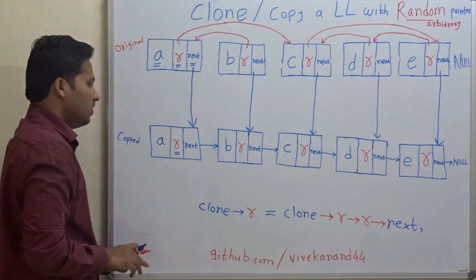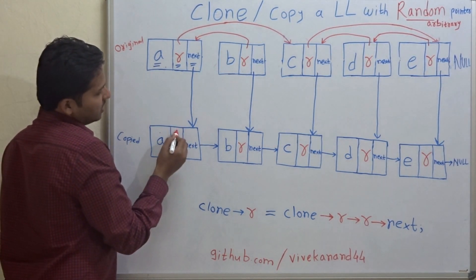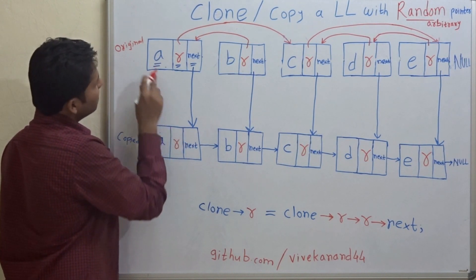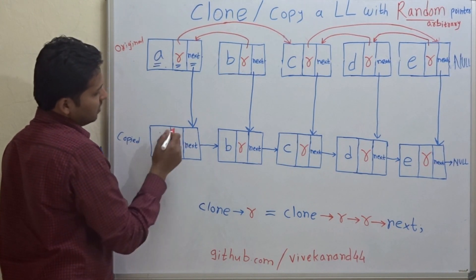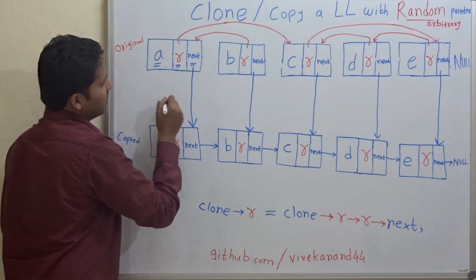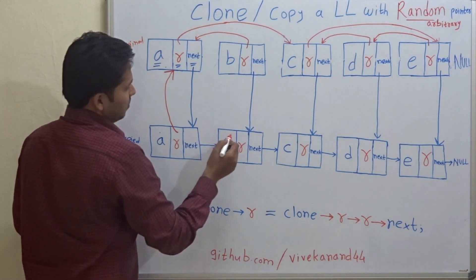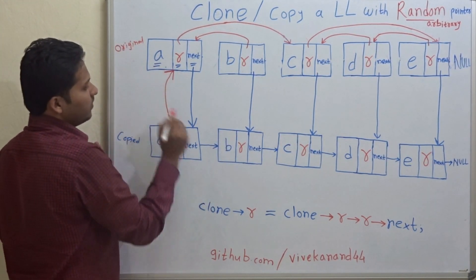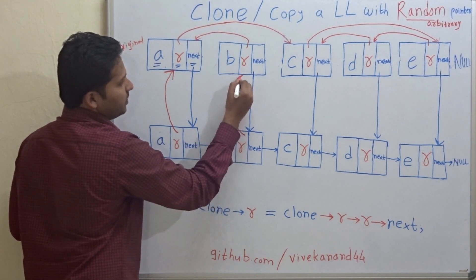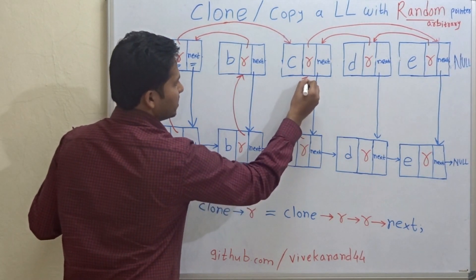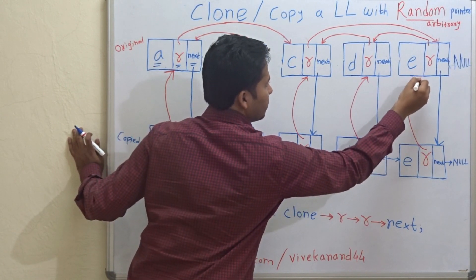The next step is: for all the random pointers in the copied linked list, give the address of the respective nodes in the original linked list. So the random pointer R of the copy of A will hold the address of node A in the original list, R for B holds the address of B, then C, then B, and E respectively.